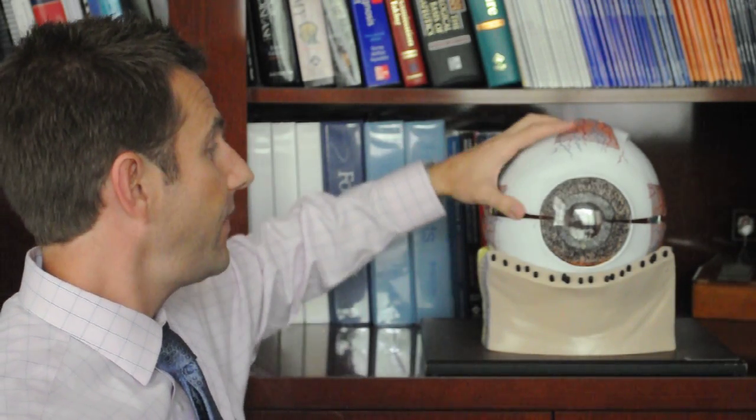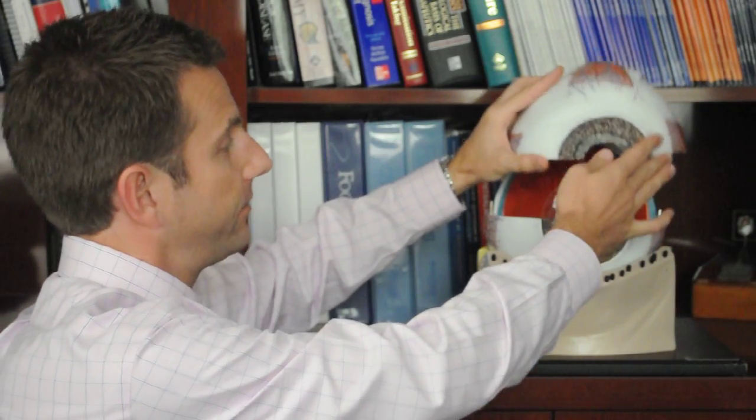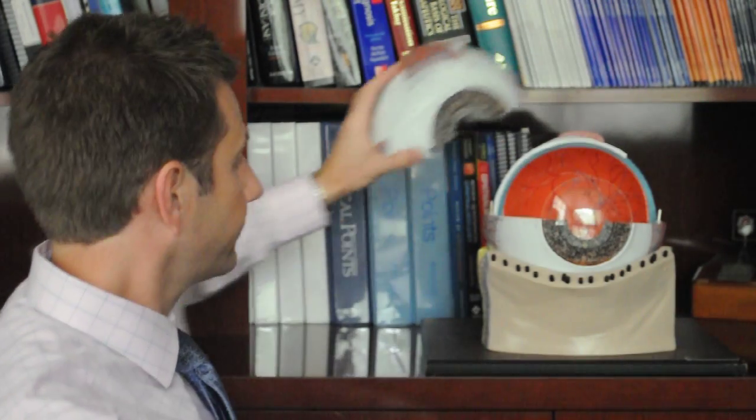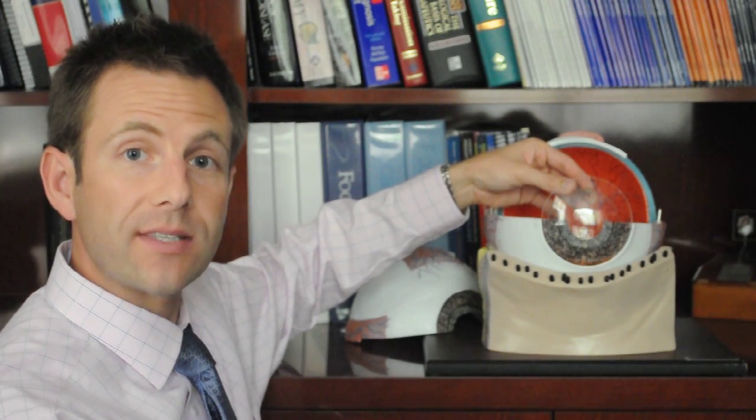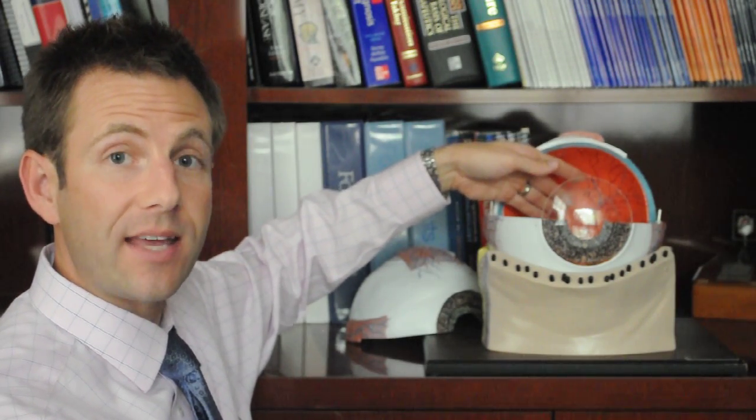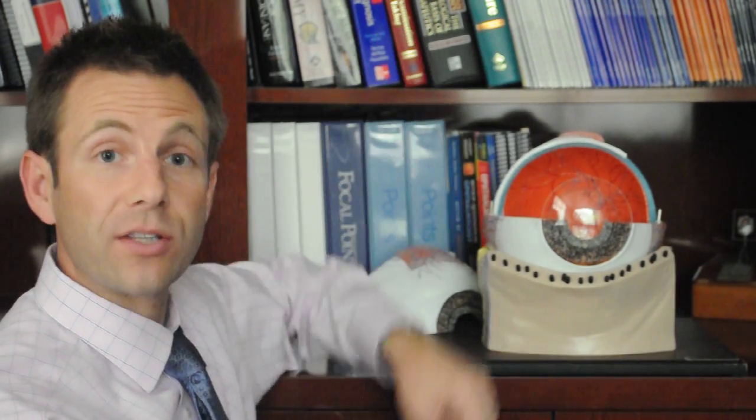Remember the cornea covers the front of the eye. Behind that sits the iris, or the colored part of the eye. Next is the lens, which helps focus the light back into the eye onto the retina, which is like the camera film or the light sensor that takes the picture and sends that information back to the brain.